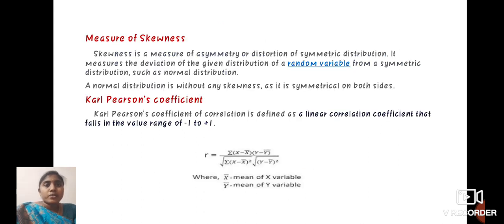Next, we define a measure of skewness. Skewness is a measure of asymmetry or distortion of an asymmetric distribution. It measures the deviation of a given distribution of a random variable from the symmetric distribution, such as a normal distribution. A normal distribution is without any skewness as it is symmetrical on both sides.